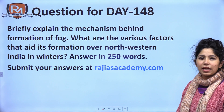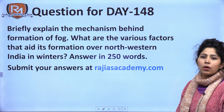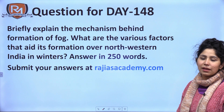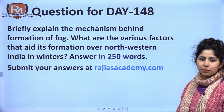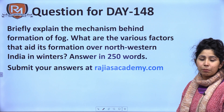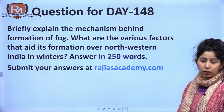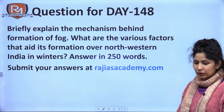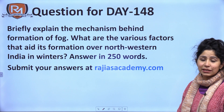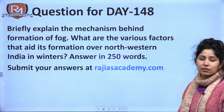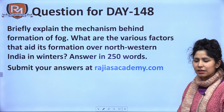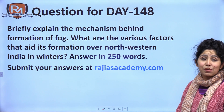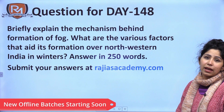The question is: briefly explain the mechanism behind formation of fog. What are the various factors that aid its formation over North Western India in winters? Answer in 250 words. Look at the first part of the question closely — briefly explain the mechanism behind formation of fog. This is a 250-word question, and in 250-word questions the examiner wants a detailed explanation from you. It is considered a long answer question. The ideal word limit is somewhere between 220 to 230 words, maximum up to 250 — do not cross the word limit at all.